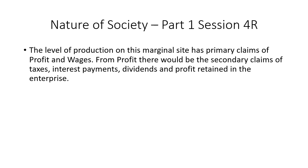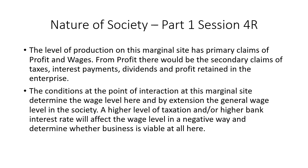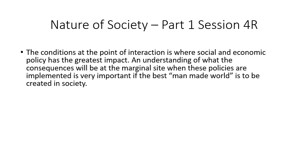The level of production on this marginal site has primary claims of profit and wages. From profit, there would be the secondary claims of taxes, interest payments, dividends, and profit retained in the enterprise. The conditions at the point of interaction at this marginal site determine the wage level here, and by extension, the general wage level in the society. A higher level of taxation and/or bank interest rate will affect the wage level negatively and determine whether the business is viable at all. The conditions at the point of interaction is where social and economic policy has the greatest impact, and understanding the consequences at the marginal site when these policies are implemented is very important if the best man-made world is to be created in society.